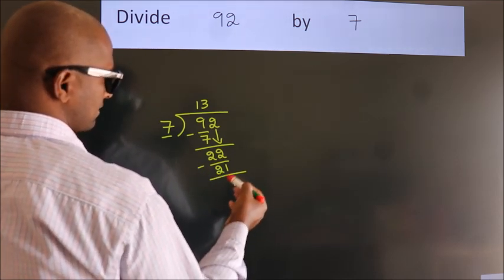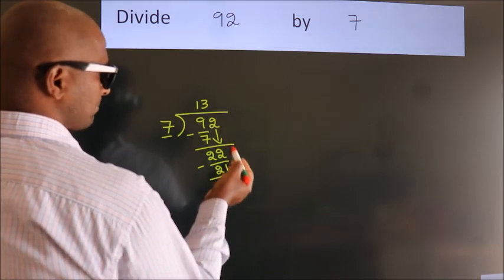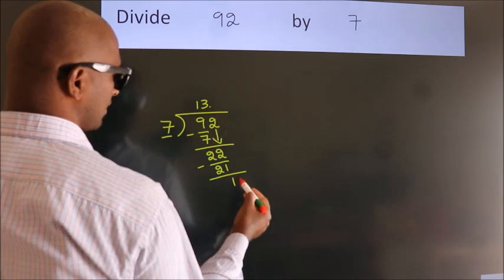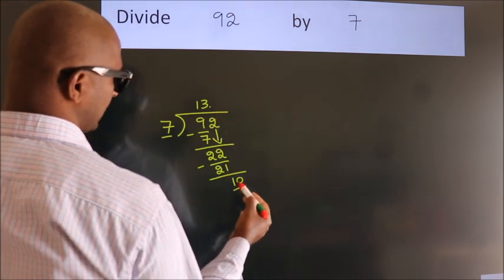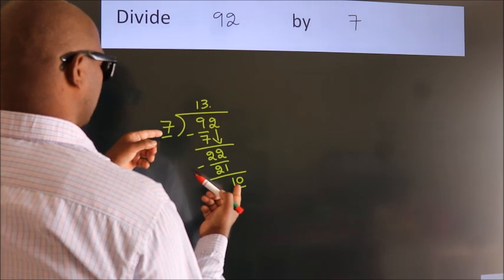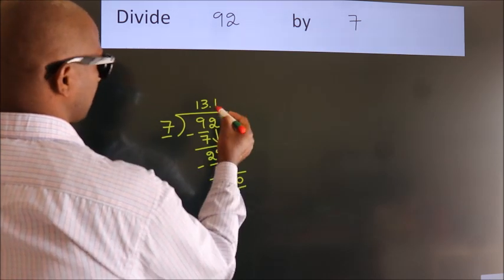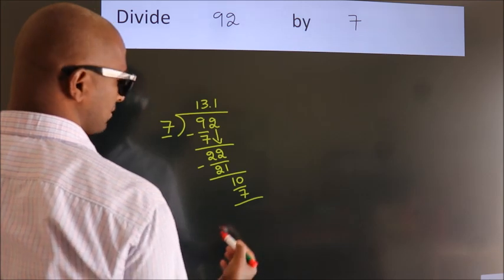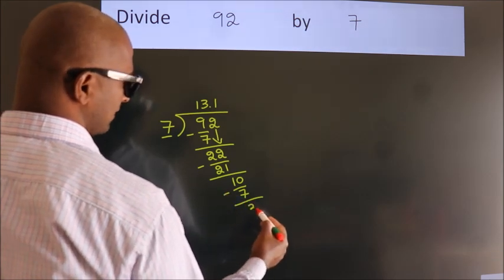After this, no more numbers to bring down. So what we do is put a dot and take 0. So 10. A number close to 10 in the 7 table is 7 once, 7. Now we subtract. We get 3.